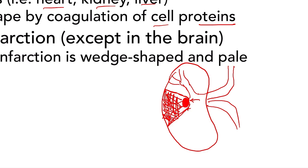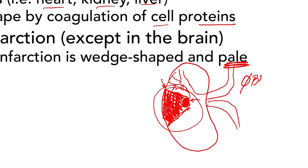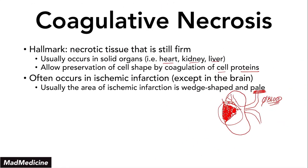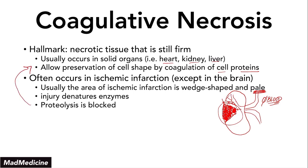Everything around it is going to have collateral flow from other arteries that are going to continuously supply. Even though you were blocking part of it, the main area is not going to be killed off because you have collateral supply. However, the area where the wedge-shape infarction is occurring is going to die because it has no collateral supply — and that's essentially why you get a wedge shape. Why is it pale? Because you are infarcting that area and no blood is able to get there. When the injury denatures the enzymes, proteolysis is blocked, and because proteolysis is blocked, you are able to preserve the shape of the cell because you're going to coagulate those proteins.